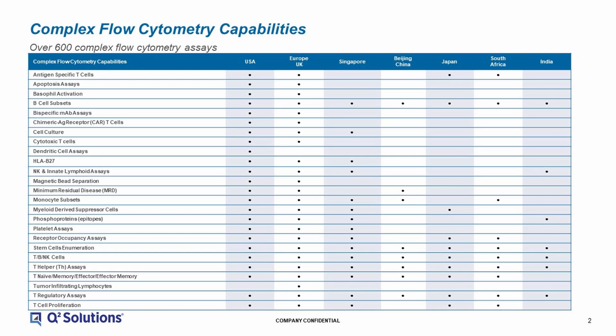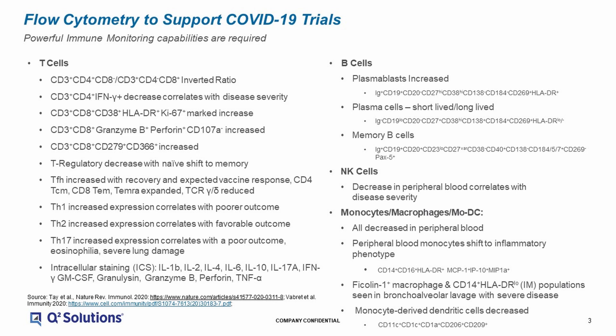We can provide a catalog of validated assays available in our global labs that may be of use in COVID-19 SARS-CoV-2 vaccine trials. After an extensive review of the current literature, we have compiled and continue to compile a list of the populations and subpopulations that are of particular interest as relates to COVID-19 trials and SARS-CoV-2 vaccine trials. There are a large number of populations from multiple sample types that may be best monitored by flow cytometry, including a broad range of assay formats — surface and intracellular assays, functional assays, and quantitative assays for absolute counting of populations of interest.